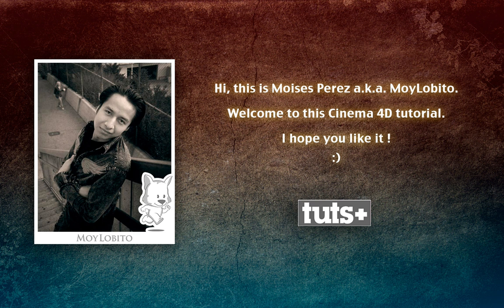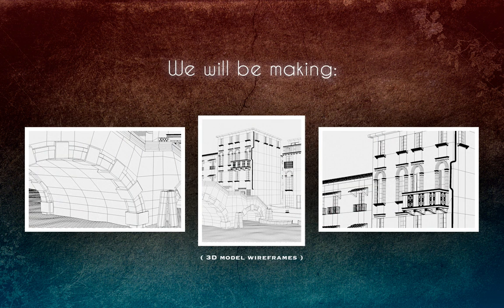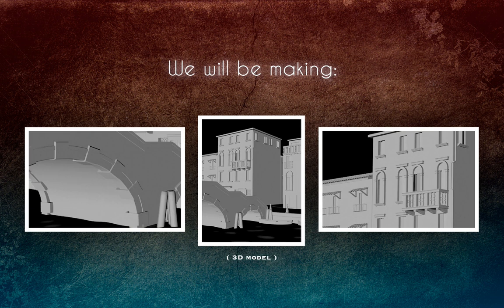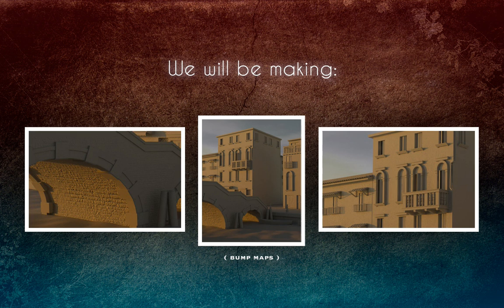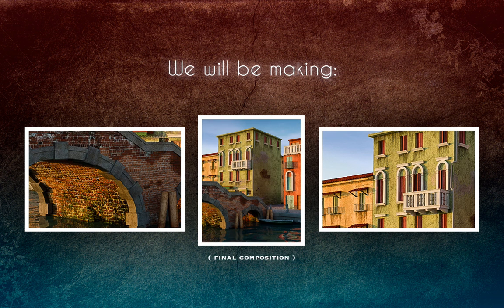Hello everyone and welcome to this fantastic tutorial for Cinema 4D. My name is Moises Perez, also known as Moilobito, and I am very glad to have you here. In this tutorial we are going to create an exterior scene in Cinema 4D. We are going to be working on modeling, UV mapping, texturing, lighting, rendering, and some post-production in Adobe Photoshop Lightroom.